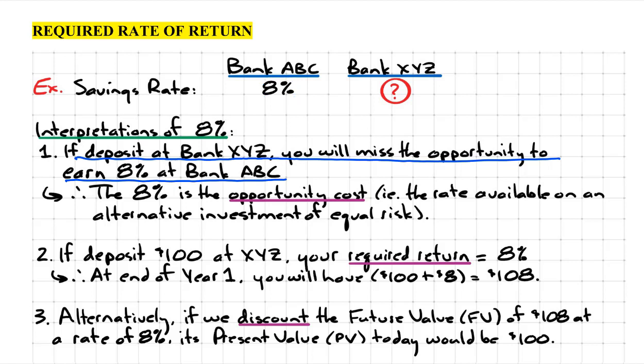Just imagine that these banks are located across the street from each other. If you were to take your money to XYZ, you will miss the opportunity to earn 8% at ABC.